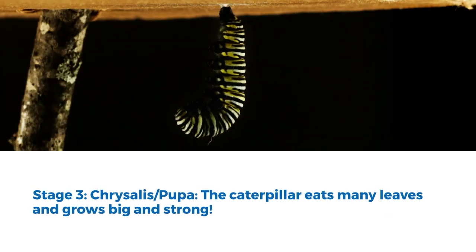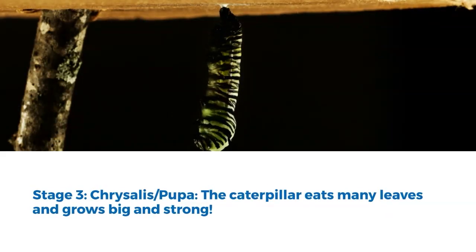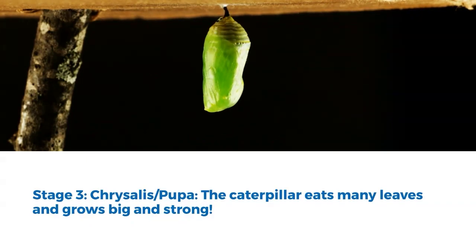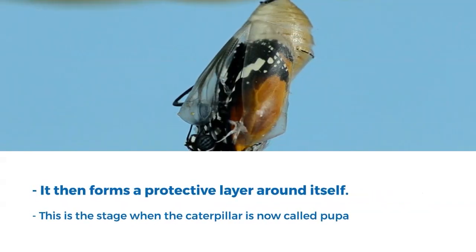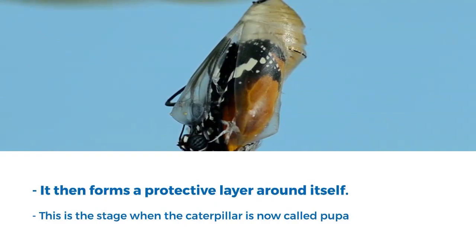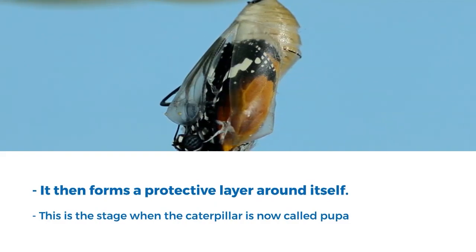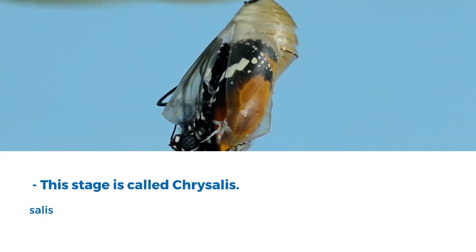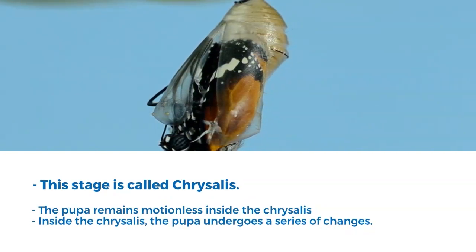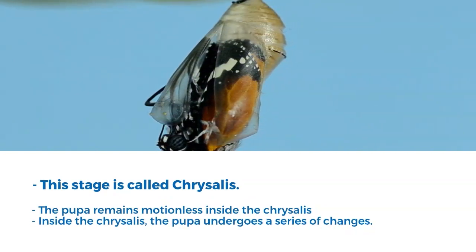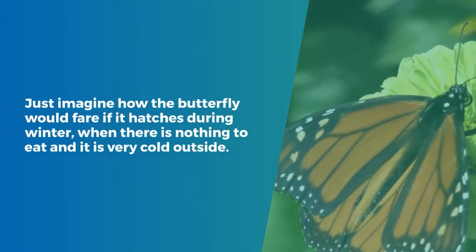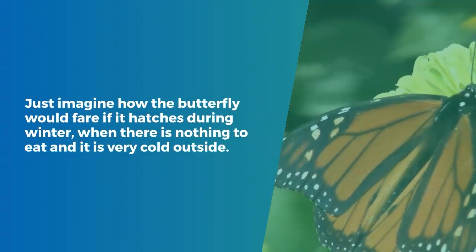Stage 3: Chrysalis or Pupa. The caterpillar eats many leaves and grows big and strong, then forms a protective layer around itself. This stage is when the caterpillar is now called a pupa. The pupa remains motionless inside the chrysalis and undergoes a series of changes.